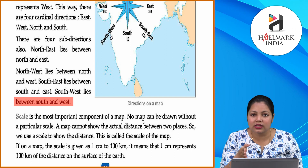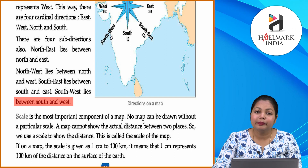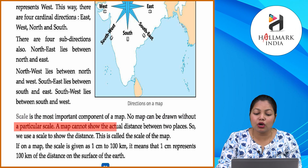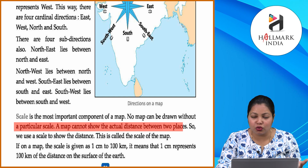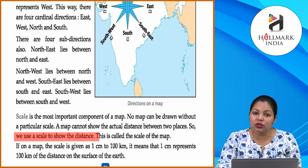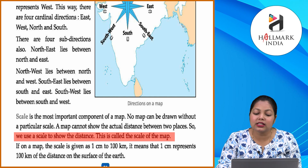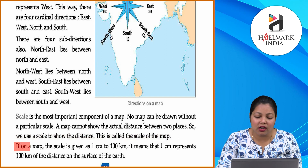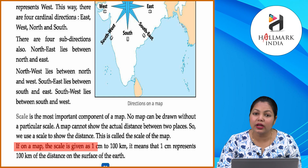Scale is the most important component of a map. No map can be drawn without a particular scale. A map cannot show the actual distance between two places, so we use a scale. In a map, the scale is given as, for example, 1 centimeter = 200 kilometers — it means that 1 centimeter represents 200 kilometers of distance on the surface of the earth.